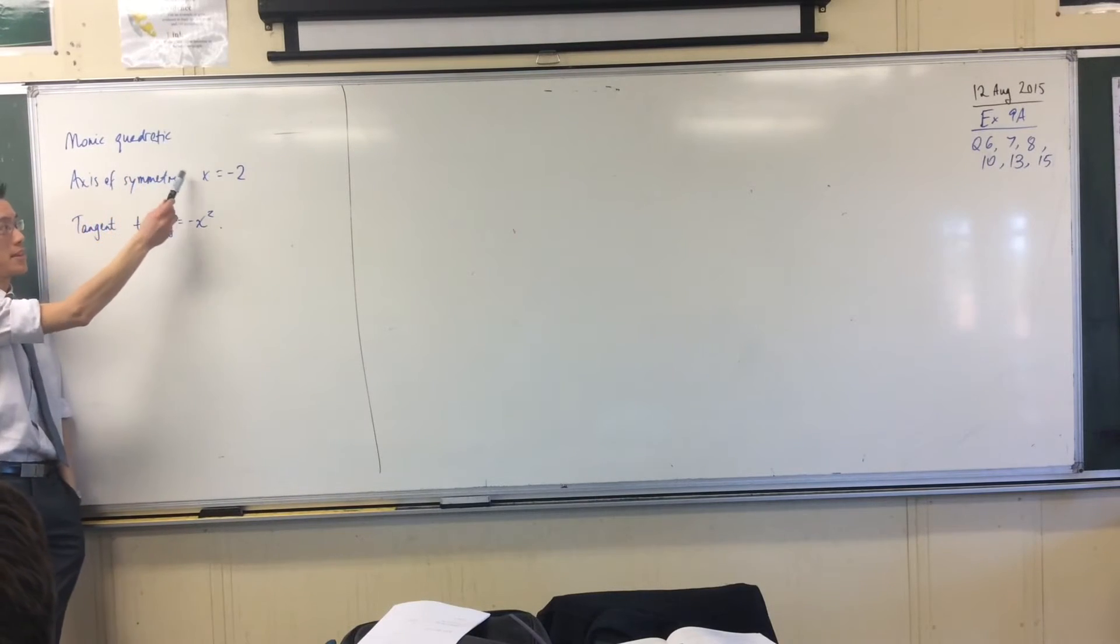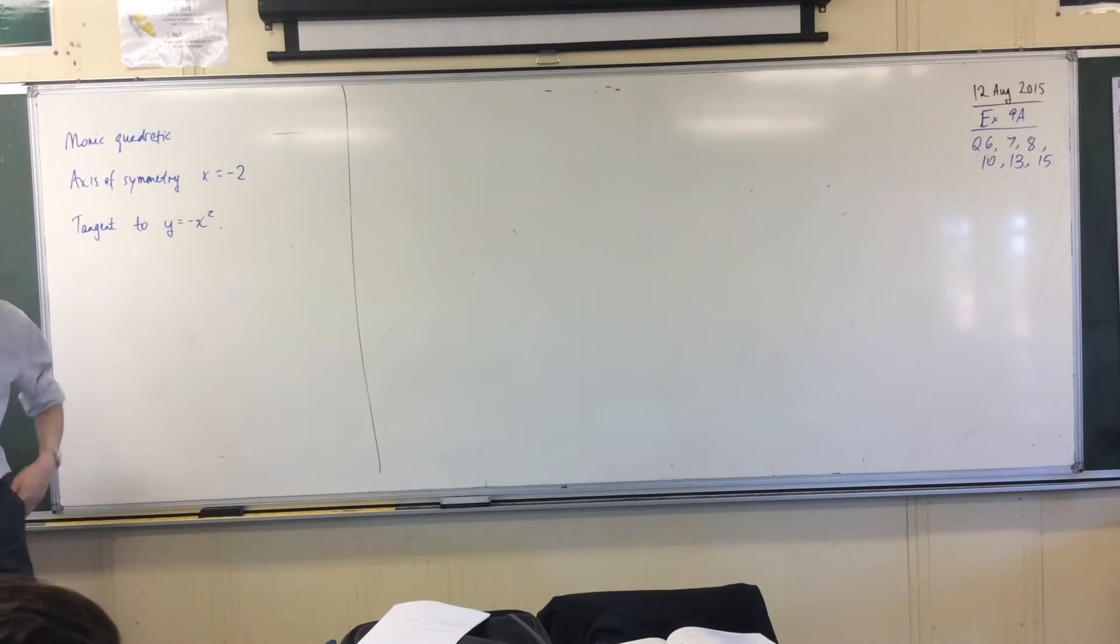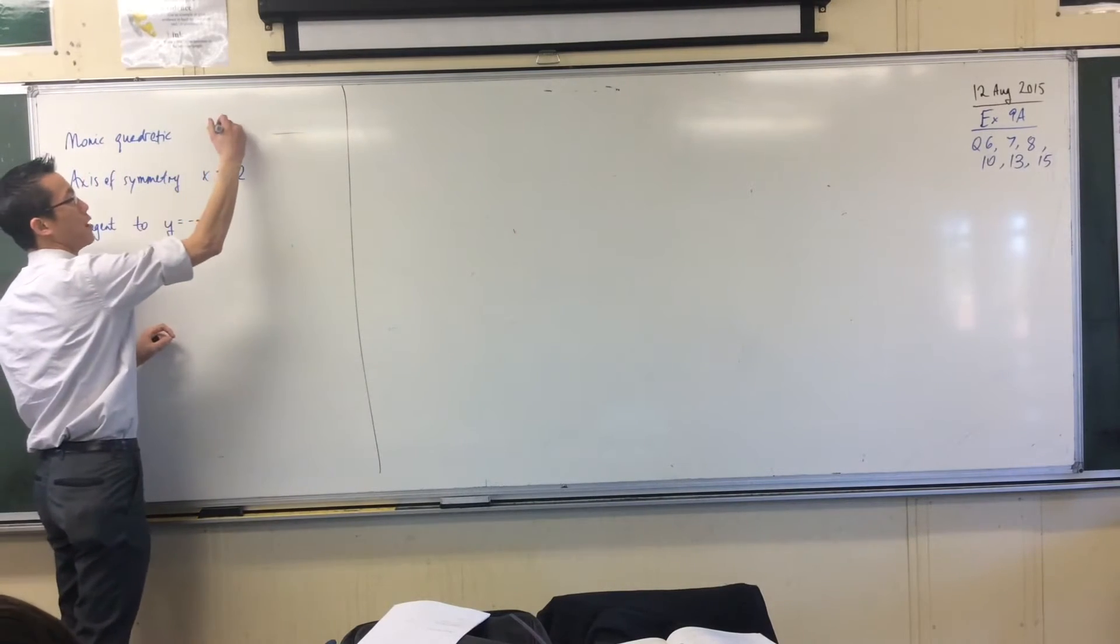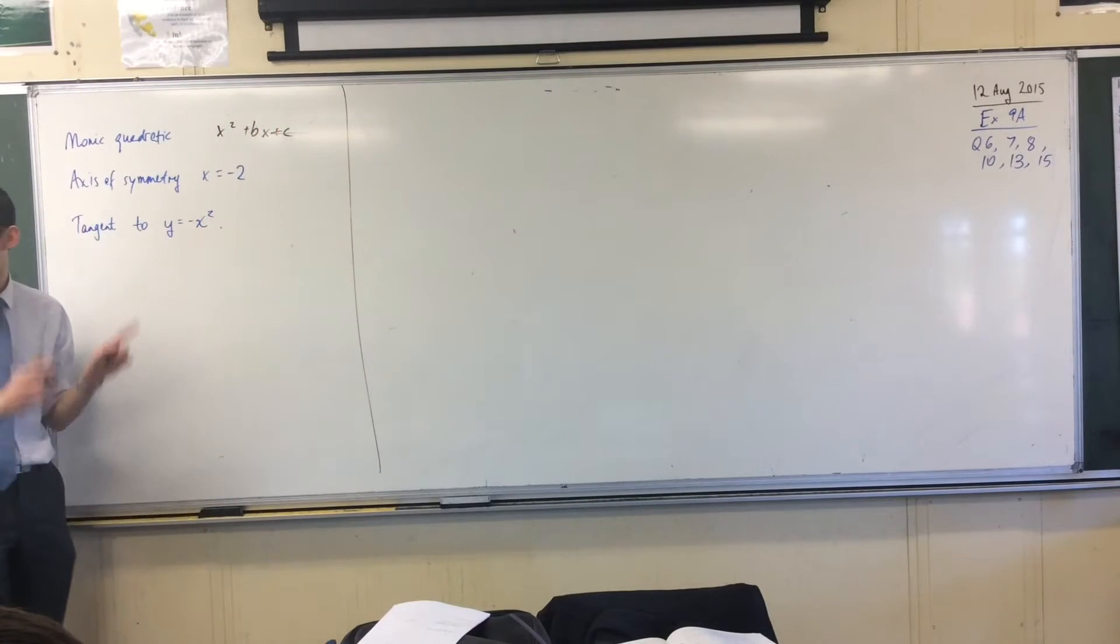They tell you this and this and then they want you to meet this condition. So let's just start with what I think you've already established, which is if it's monic, that means it's in the form x squared plus bx plus c, so that's monic, a is equal to 1.